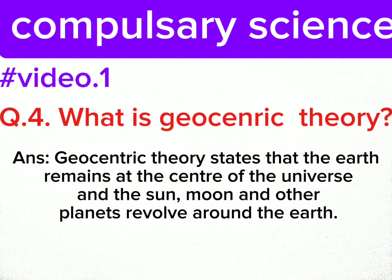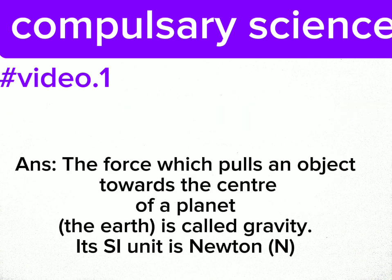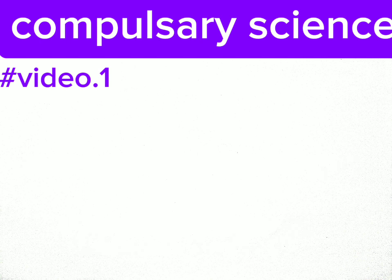Geocentric theory states that the Earth remains at the center of the universe, and the sun, moon, and other planets revolve around the Earth. The force which pulls an object towards the center of a planet, the Earth, is called gravity. Its SI unit is Newton.